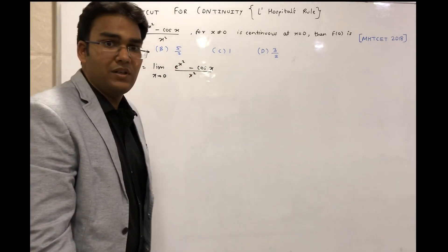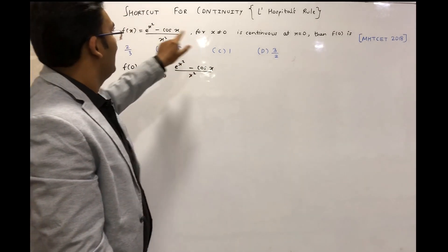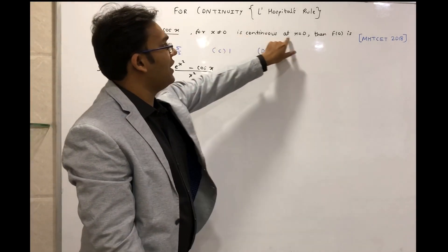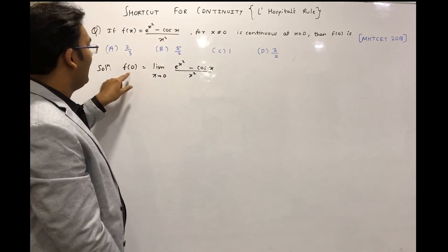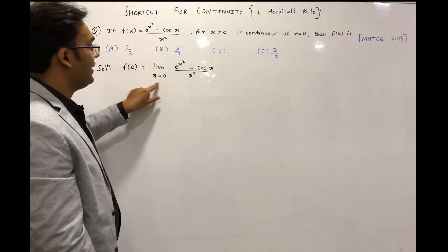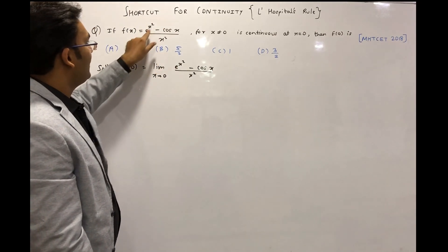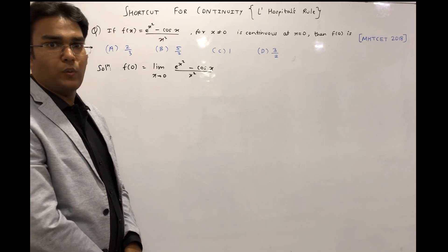Since the function f(x) is continuous at x = 0, we can write f(0) as limit x tends to 0 of (e^(x²) - cos x) / x².